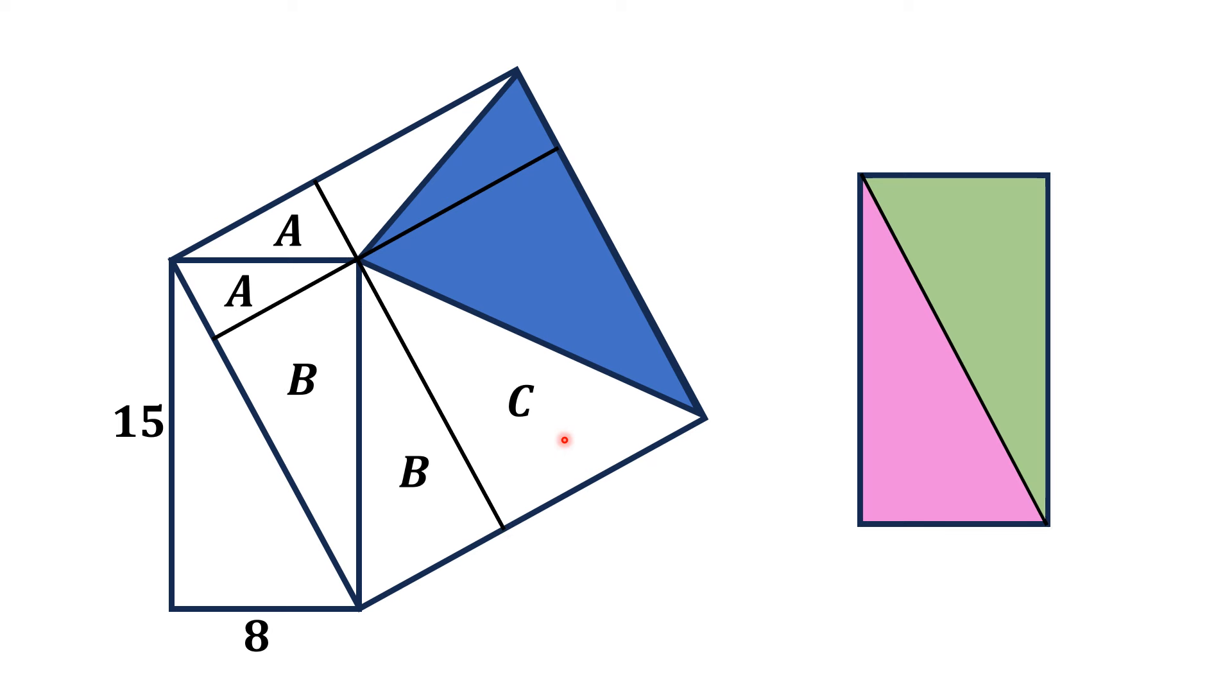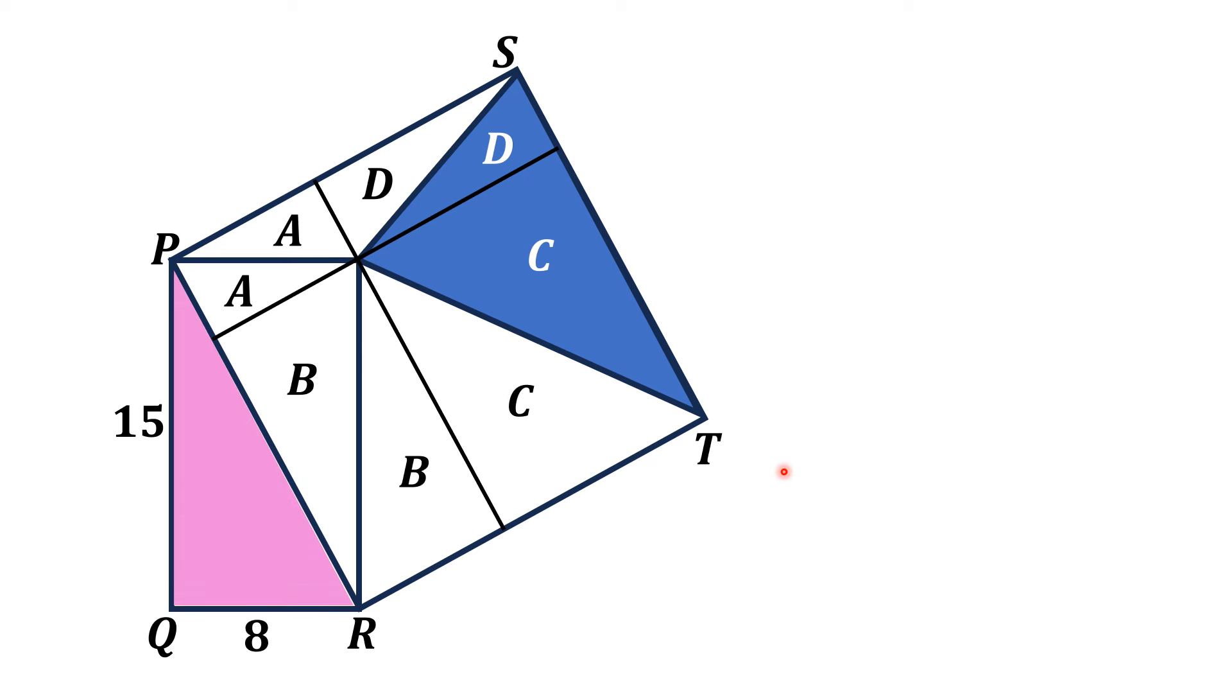Now, if this area is C, then this area is also D. Now, we label the vertices of the figure as P, Q, R, S, and T.